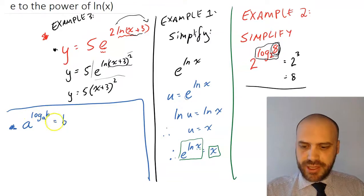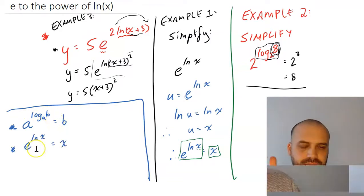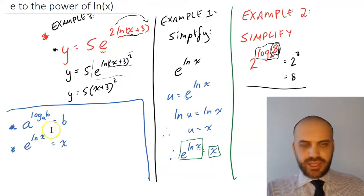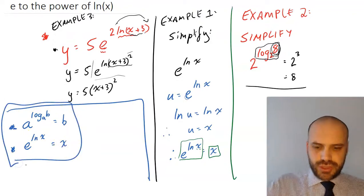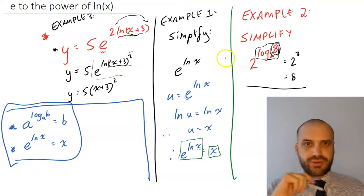And now to put it in simple rule form, a to the log base a, b is equal to b. The more specific rule, e to the ln x equals x. These are the 2 rules that are demonstrated with these 3 examples.